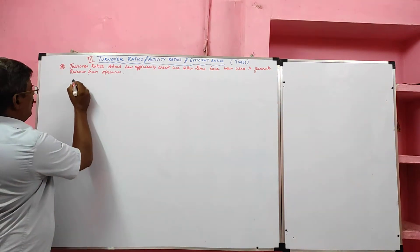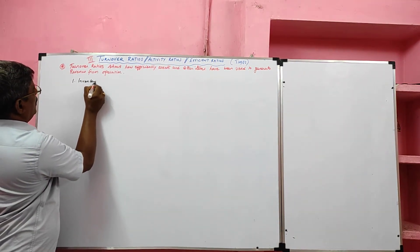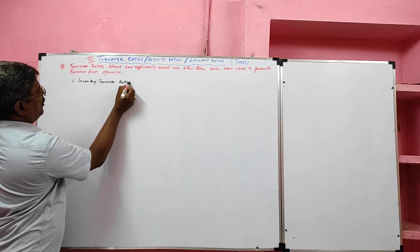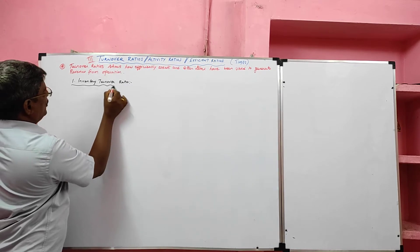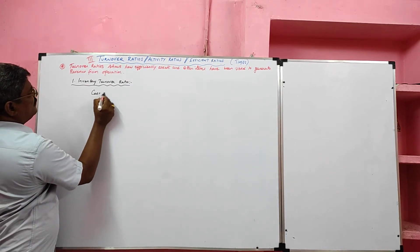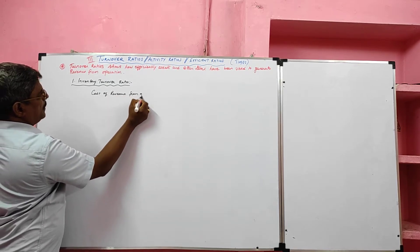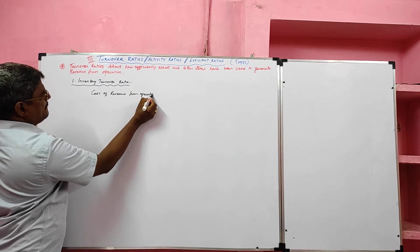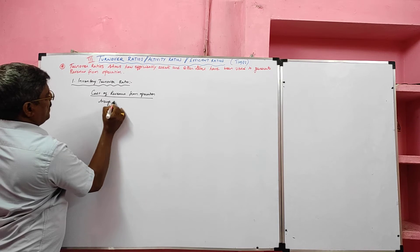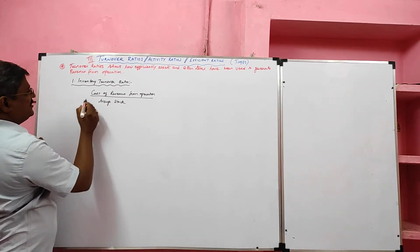The first ratio we are going to learn is inventory turnover ratio. Today we are going to learn only formulas. The formula for inventory turnover ratio is: cost of revenue from operations divided by average stock. Average stock means average inventory.